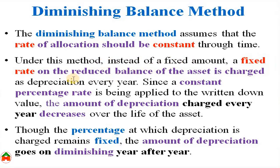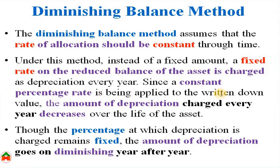Under this diminishing balance method, a fixed rate of depreciation is applied on the reduced balance of the asset. Reduced balance indicates the written down value of the asset, or book value of the asset. We can calculate the written down value by deducting the residual value from the acquisition cost of the asset. However, since a constant percentage rate is applied to the written down value, the amount of depreciation decreases year after year, but the rate of depreciation is fixed throughout the estimated useful life.